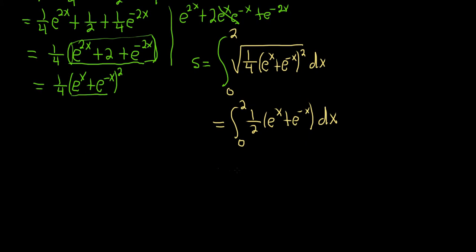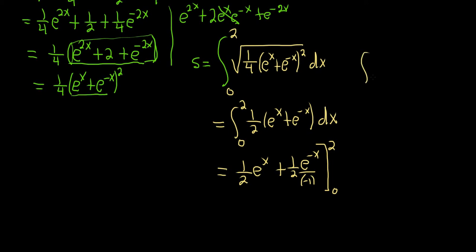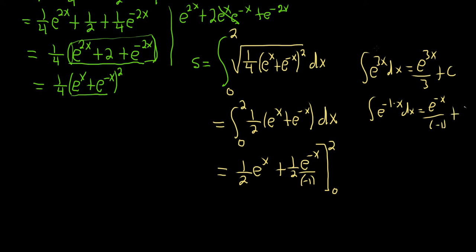This is a straightforward integral. The integral of e^x is e^x, and the integral of e^{-x} is e^{-x} divided by negative 1. In general, for e^{kx}, you divide by k. So the antiderivative is 1/2 e^x minus 1/2 e^{-x}, evaluated from 0 to 2.